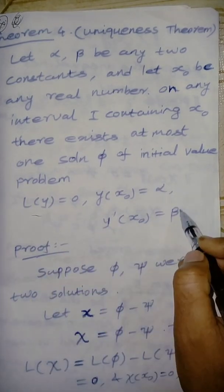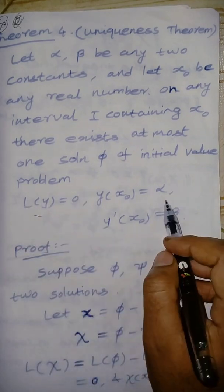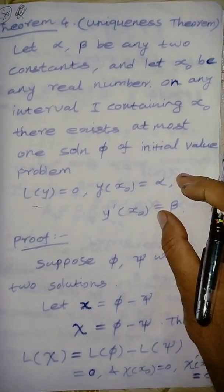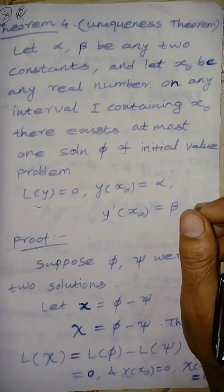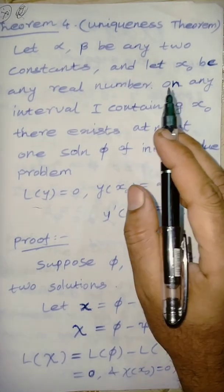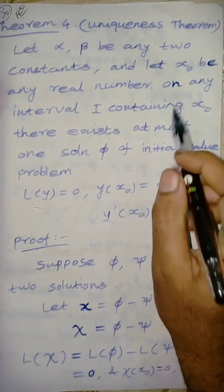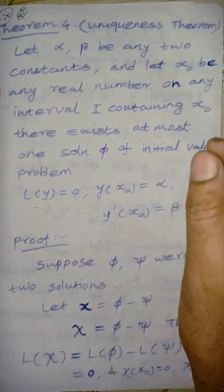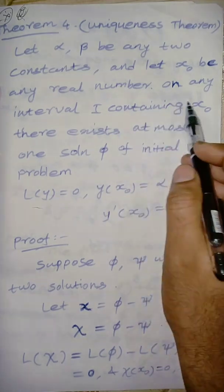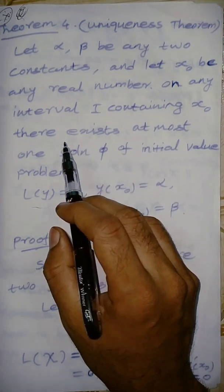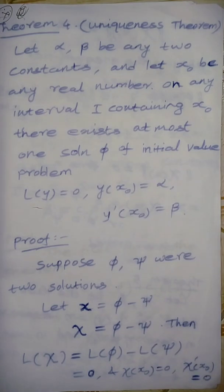Of the initial value problem. This is the initial value problem. That is the uniqueness theorem: alpha, beta are any two constants, x0 is a real number on an interval, and there exists at most one solution of the initial value problem.